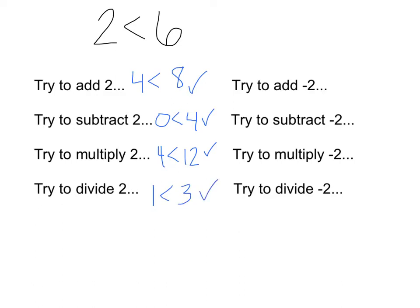So no matter what, when we add, subtract, multiply, or divide by positive numbers, we're all good. Let's try adding, subtracting, multiplying, and dividing negative numbers. If I add negative 2: 2 plus negative 2 is 0, 6 plus negative 2 is 4. Is 0 less than 4? Yeah, that's fine. Subtracting negative 2 is like adding, because two negatives become a positive. So that's 4 is less than 8 — fine too.